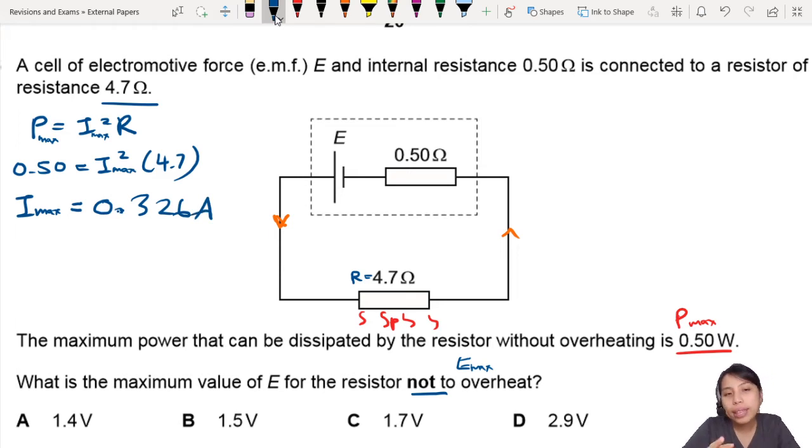I know when there is maximum power, the current in the circuit will be 0.326 and that's the highest I can go. I cannot go higher than that because the poor resistor will overheat. With that, now I can think of, I need to find what is E.